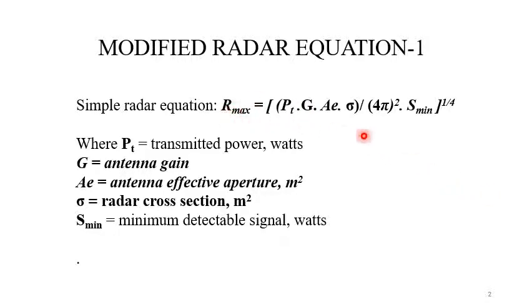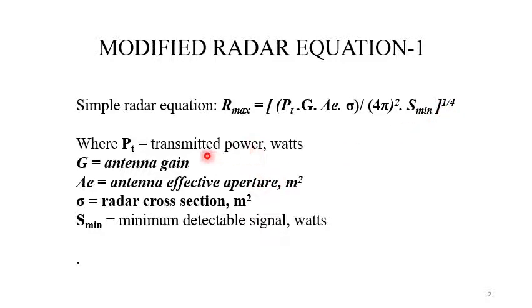This was the equation derived in the previous lecture. R_max is the maximum range of the radar target, equal to (P_t · G · A_e · σ) / (4π²) all to the power 1/4, divided by S_min. Here P_t is the transmitted power, G is the antenna gain, A_e is the antenna effective aperture, σ is the radar cross-section, and S_min is the minimum detectable signal in watts.